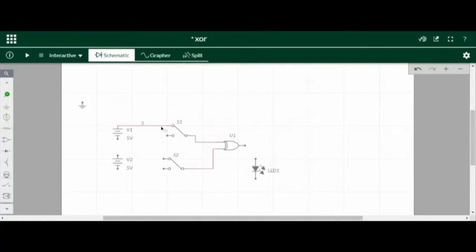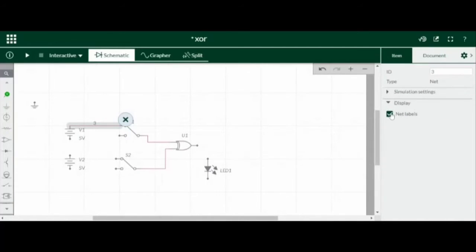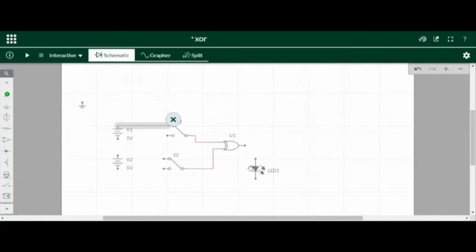Uncheck net labels. Voltage sources have two terminals: one terminal will connect to ground and the other terminal will connect to the switch. Similarly, S1 and S2 have two input terminals. One will connect to ground and the other will connect to voltage sources. The rest of the terminals will connect to the ground.